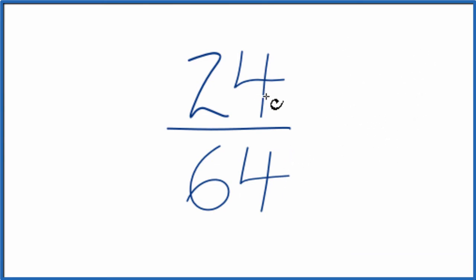So we could list the factors of 24 and 64, but what I want to do, since they're both even numbers, is divide the numerator and the denominator by 2.